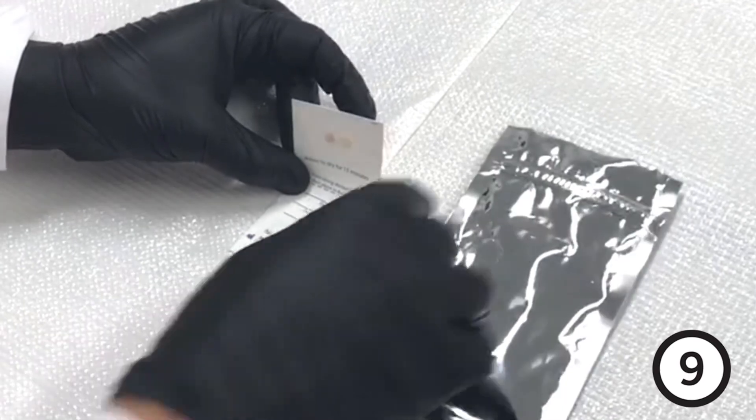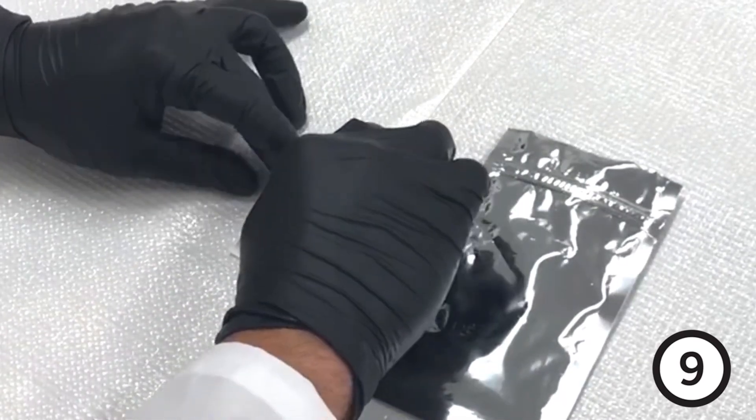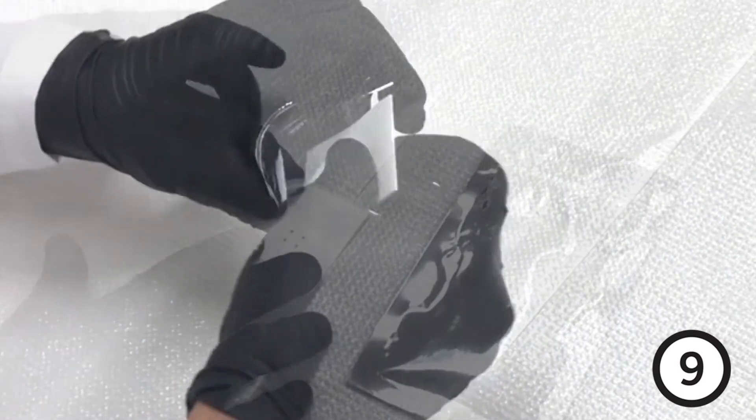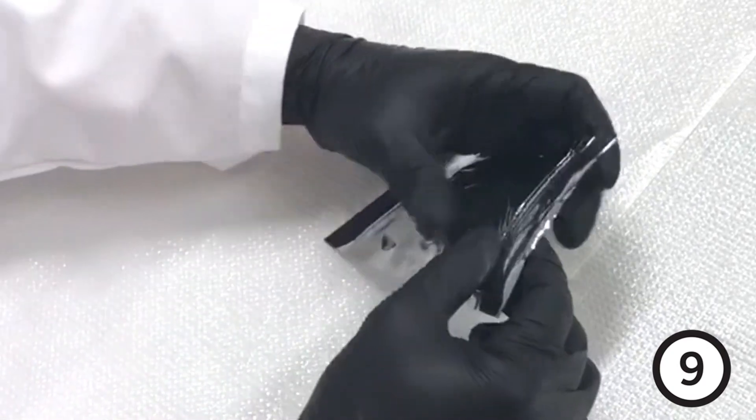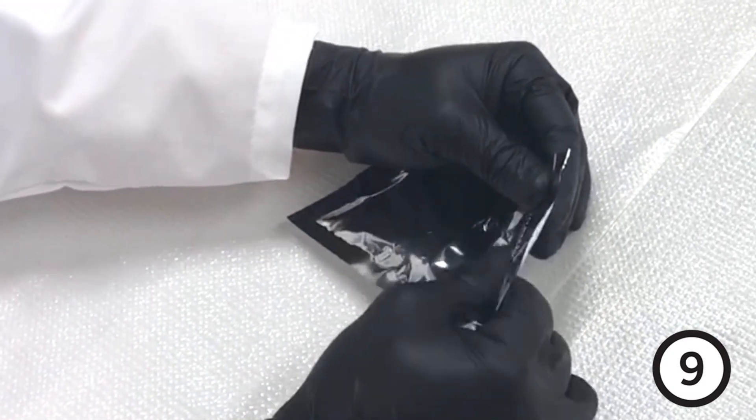Fold the collection card in half where indicated by the dotted line. Place the folded card into the silver return shipping package and seal tight. Ensure the silica gel insert remains in the package.